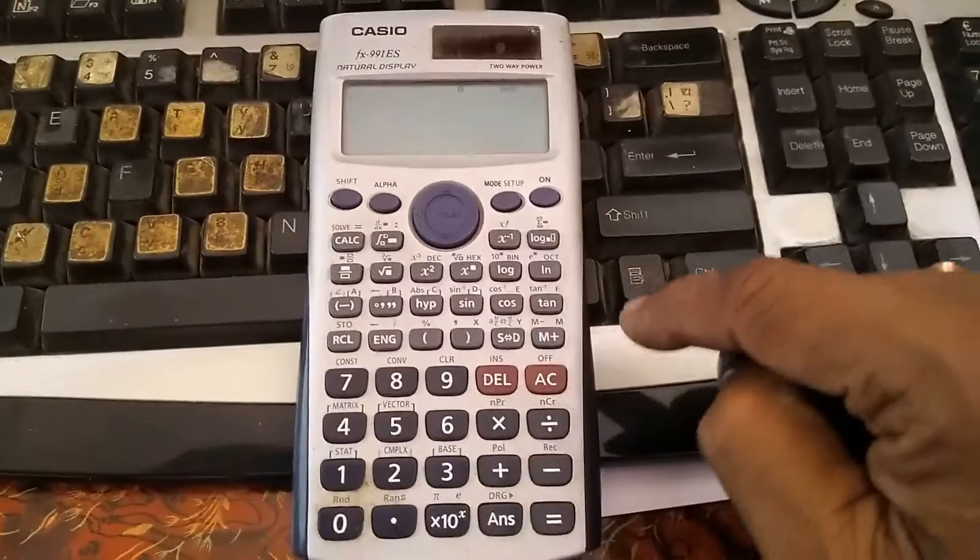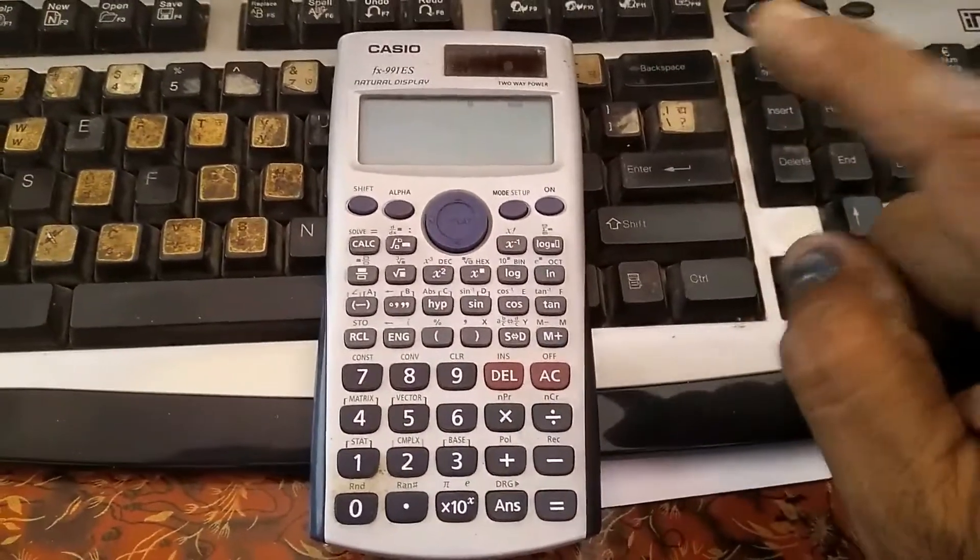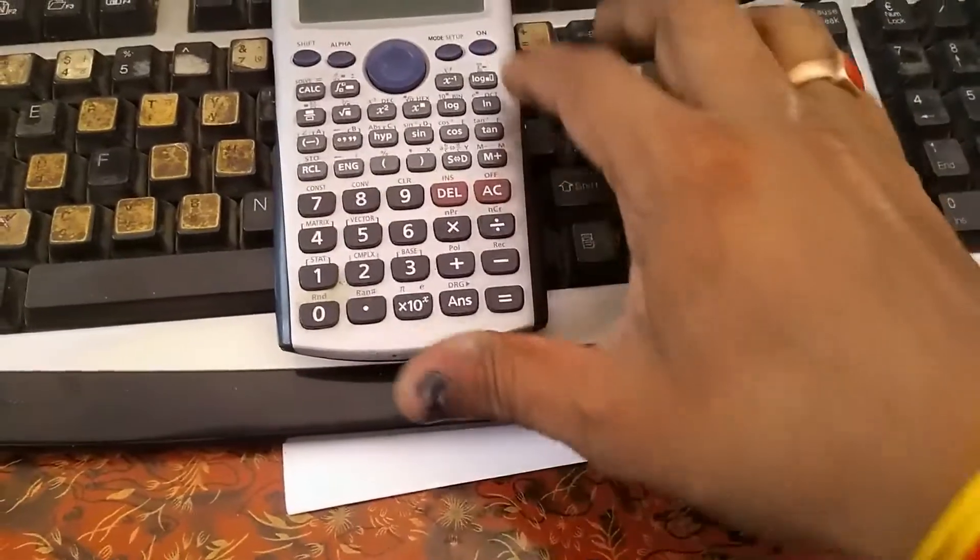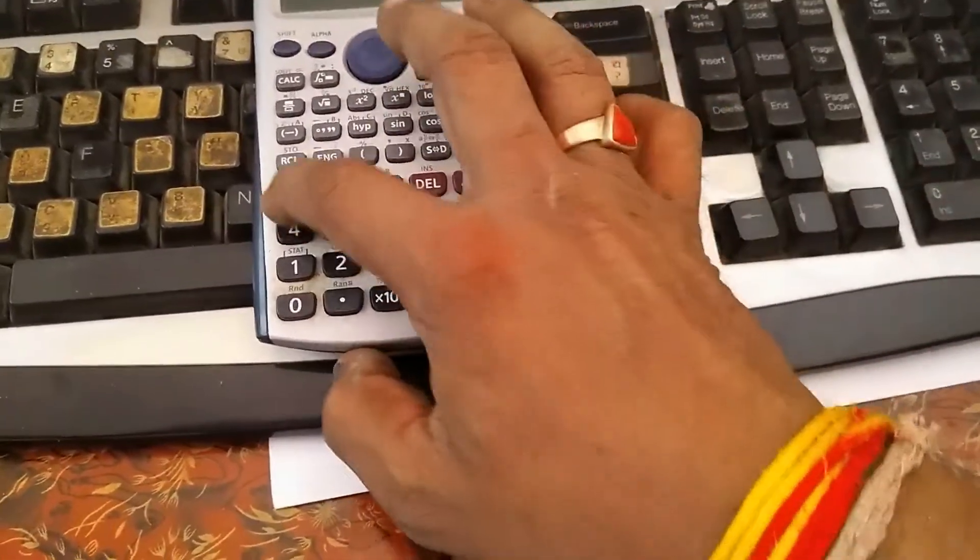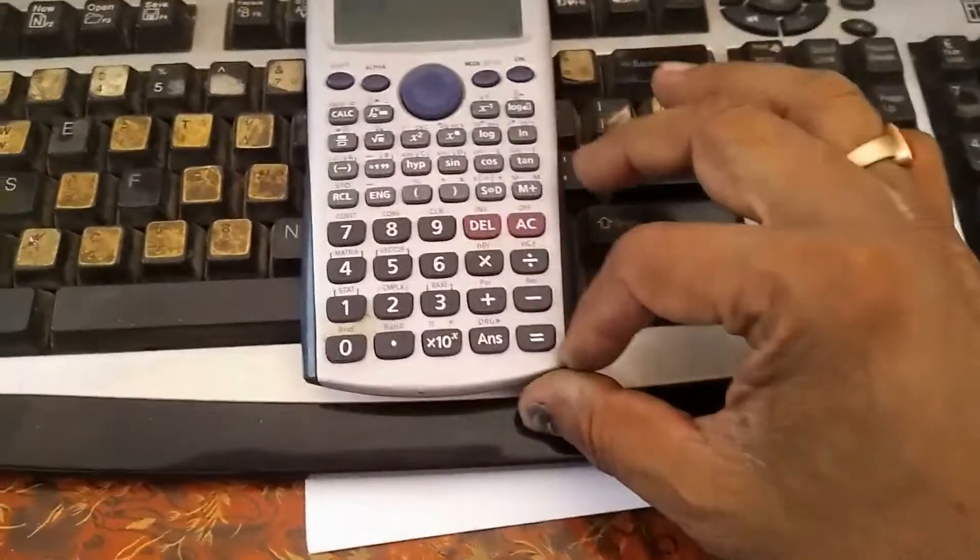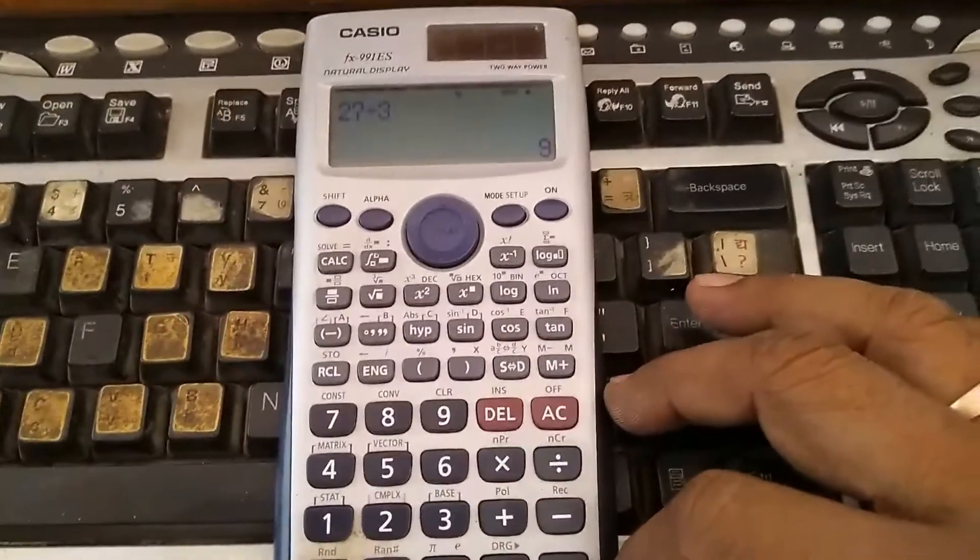This is how we can reset our scientific calculator. Now if we calculate something like 27 divided by 3, the answer would be 9. You can see the answer is correct.